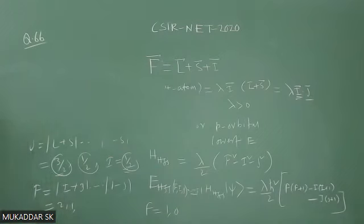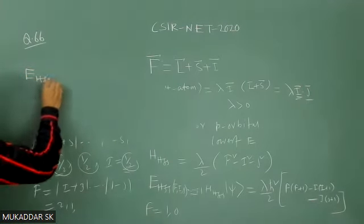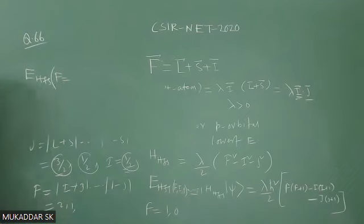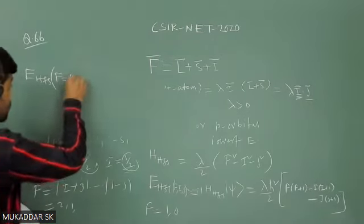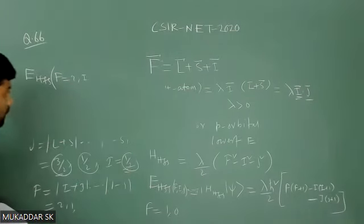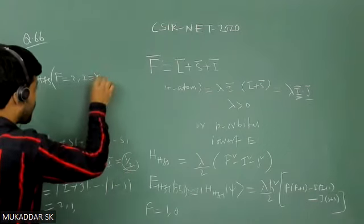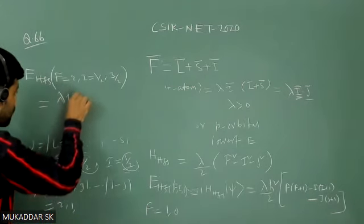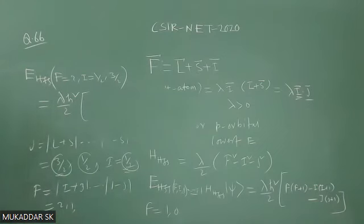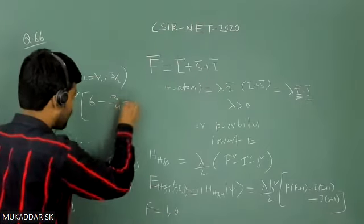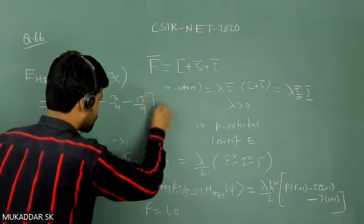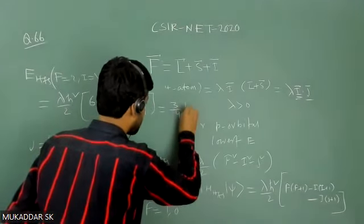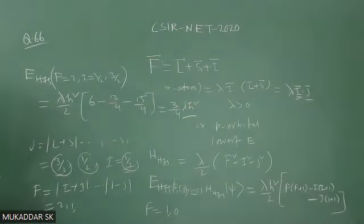First, calculate E_HFS for F = 2, corresponding to I = 1/2 and J = 3/2. You get (λℏ²/2)[F(F+1) − I(I+1) − J(J+1)] = (λℏ²/2)[6 − 3/4 − 15/4]. If you calculate this, you get (3/4)λℏ². So this combination gives E_HFS = (3/4)λℏ².